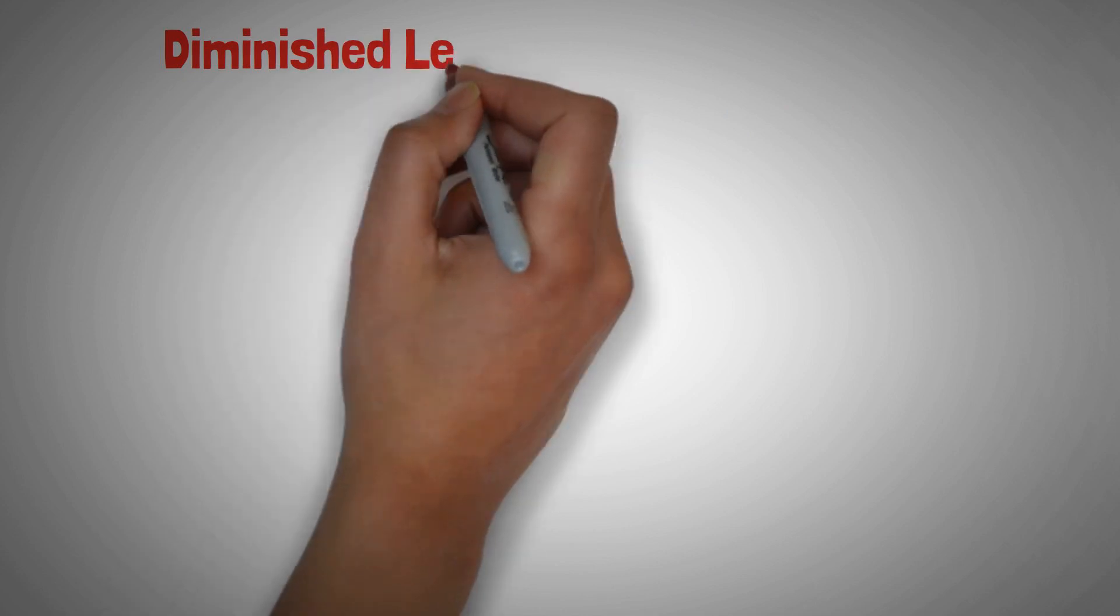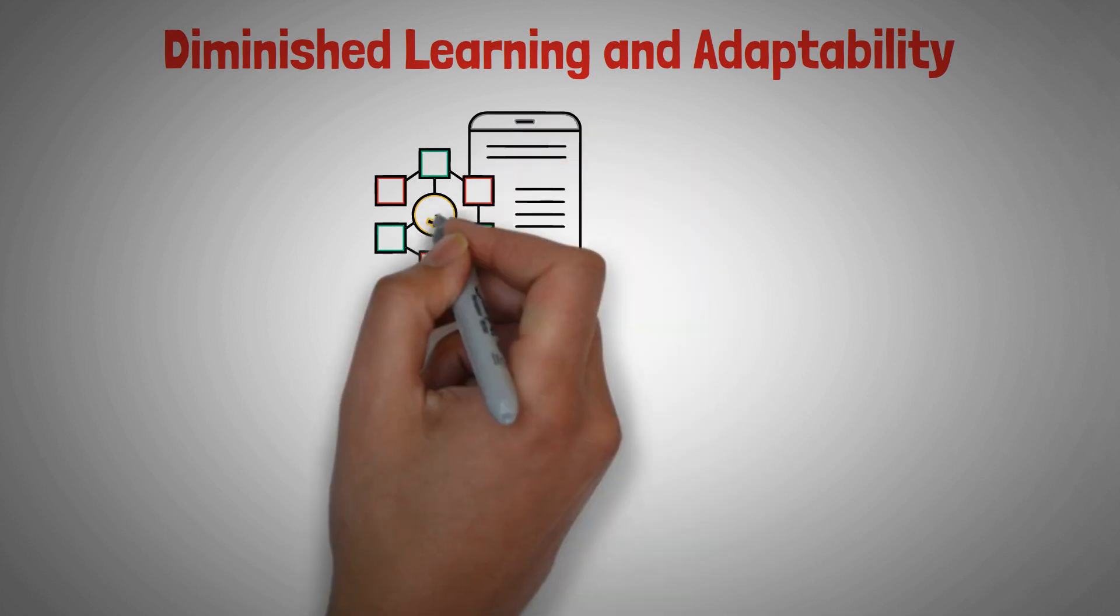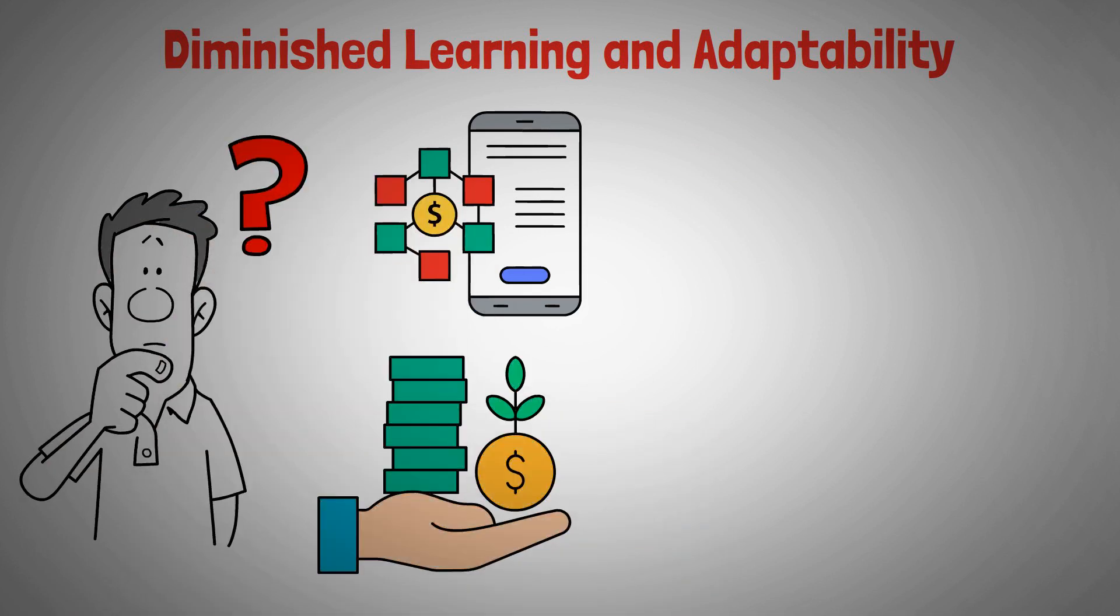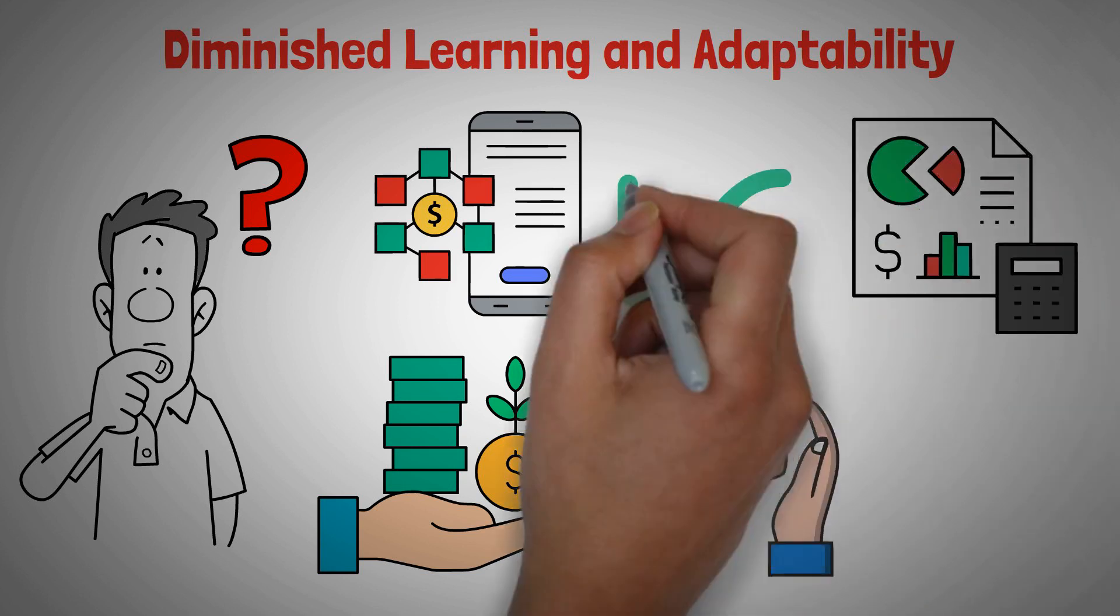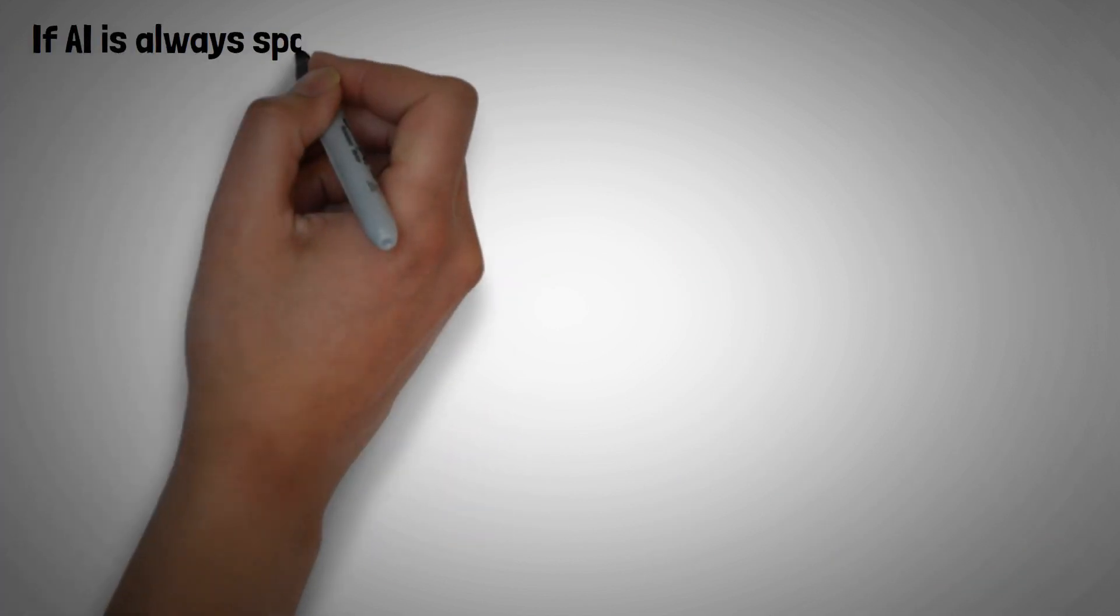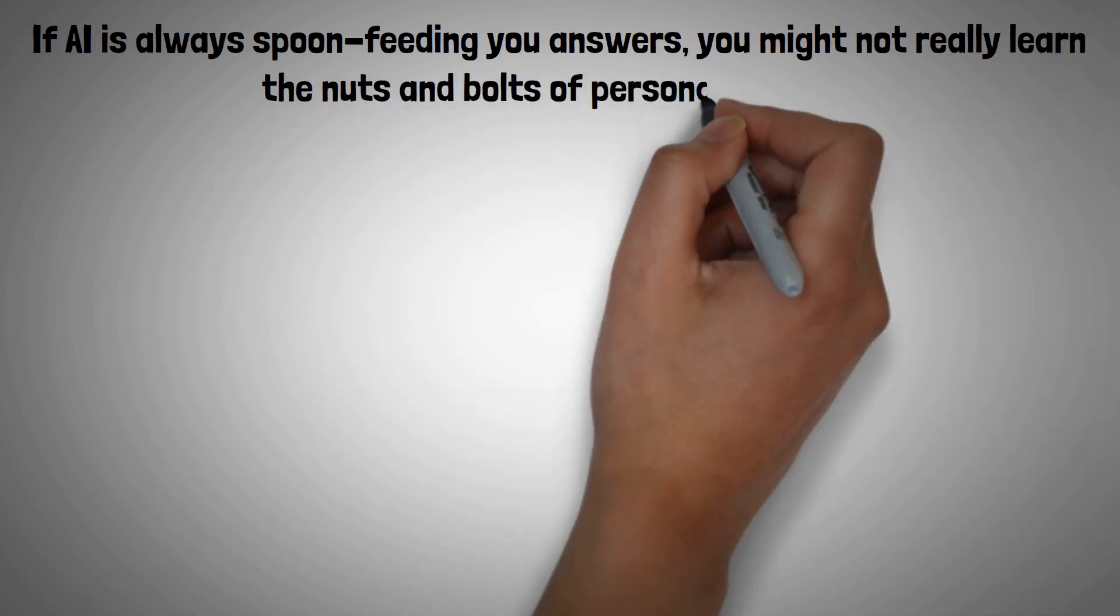Number five, diminished learning and adaptability. Now, most of you probably have a trusty AI app that's like your financial oracle. Need to know where to invest? Ask the AI. Wondering how to save money? The AI has a plan. It's super convenient, sure, but here's the hitch. If AI is always spoon-feeding you answers, you might not really learn the nuts and bolts of personal finance.